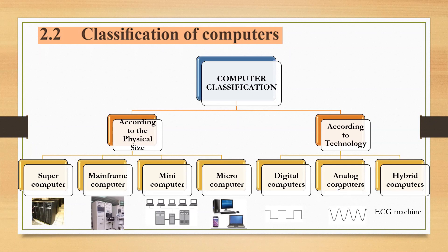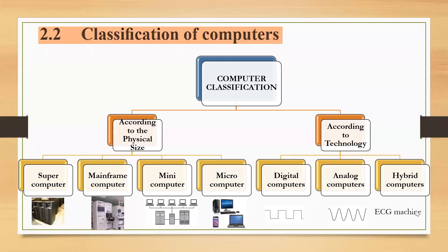Normally these generate a current with continuous signals — just like temperature, it is continuously changing. So there are so many physical properties we can measure by using analog computers. And hybrid computers — these types of computers use both analog and digital signals. Example: ECG machine. So this is the classification of the computer — those are the things you have to remember.